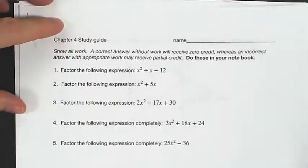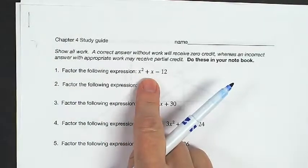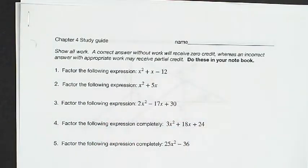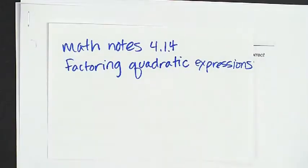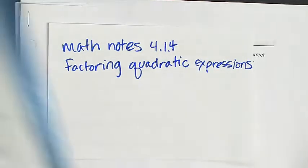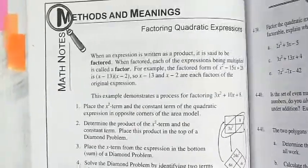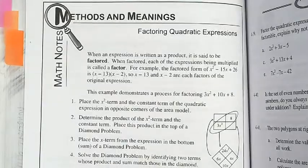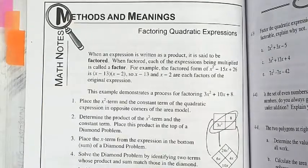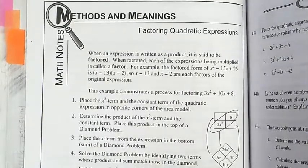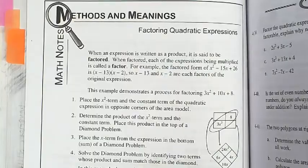Looking at your study guide, it says to factor the following expression. If you're wondering, oh, I don't remember how to do all of this, there are some math notes in Lesson 4.1.4. If you pull up your e-book and go to that lesson, at the end of the lesson are some math notes on factoring quadratic expressions. A lot of people will say, just do the area diamond model — yes, that is what you're doing, but I would like you to call it factoring a quadratic.